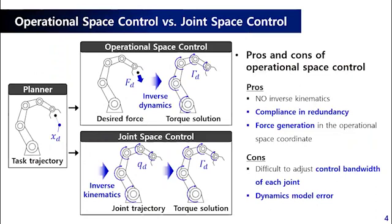Torque-based robot control can be implemented in either operational space or joint space. In operational space control, torque solution is obtained by inverse dynamics to produce the desired force at that task point. In joint space control, on the other hand, torque solution is obtained by inverse kinematics to follow the joint trajectory. Pros of operational space control are that compliance exists in redundancy, and that force can be generated directly in the operational space coordinate.